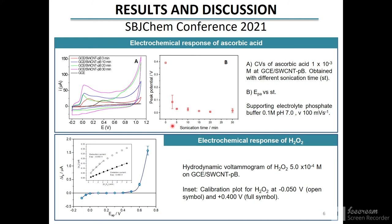The electrochemical response of hydrogen peroxide was also analyzed. The figure shows the hydrodynamic voltammogram and calibration plots obtained for these analytes. The notorious reduction and oxidation currents are associated with the increment of the electrode area, while the decrease of the oxidation potential is attributed to the presence of carboxylic groups of the functionalized nanotubes.